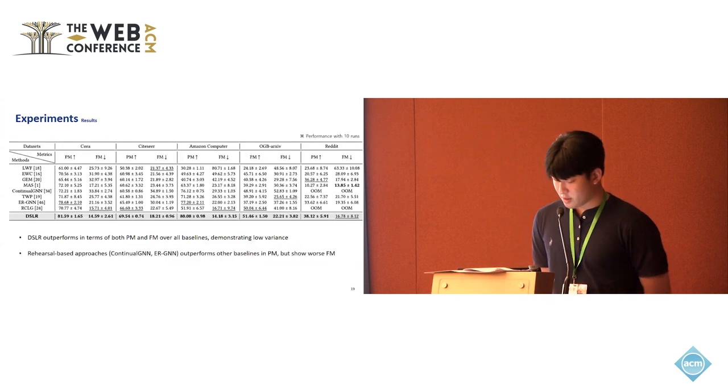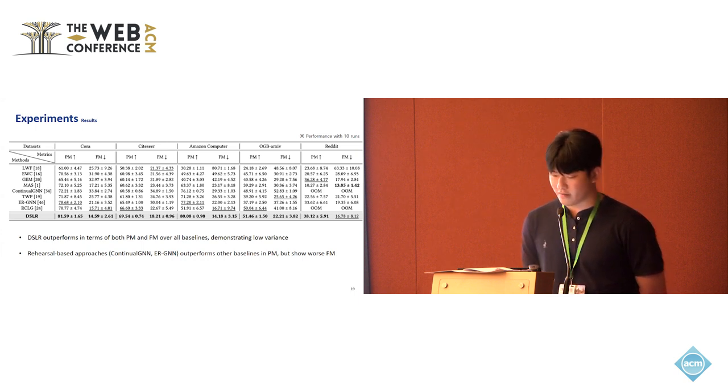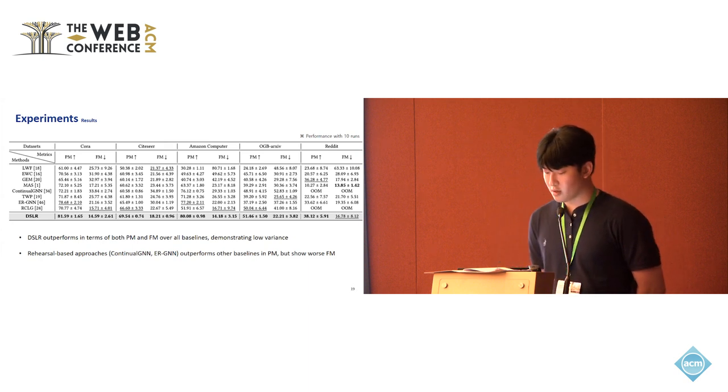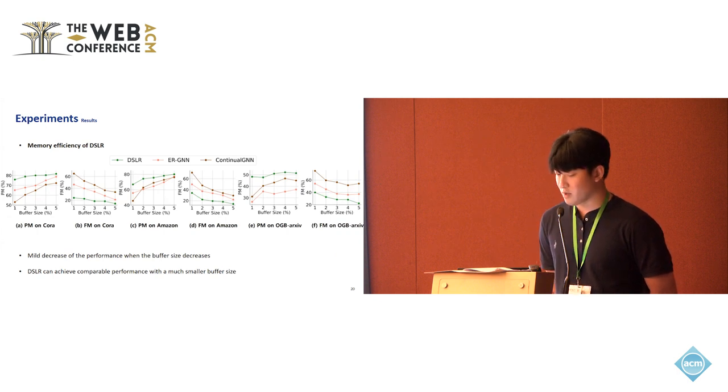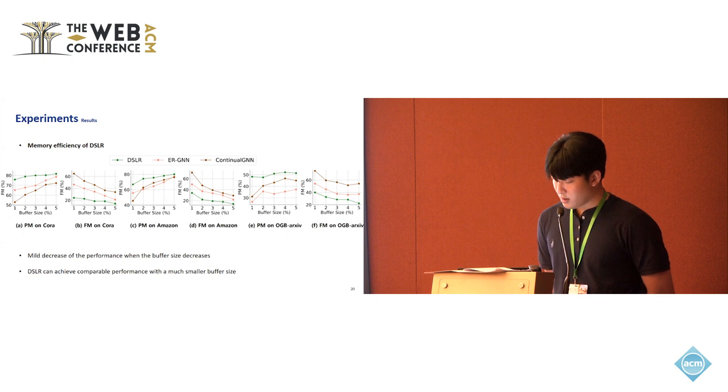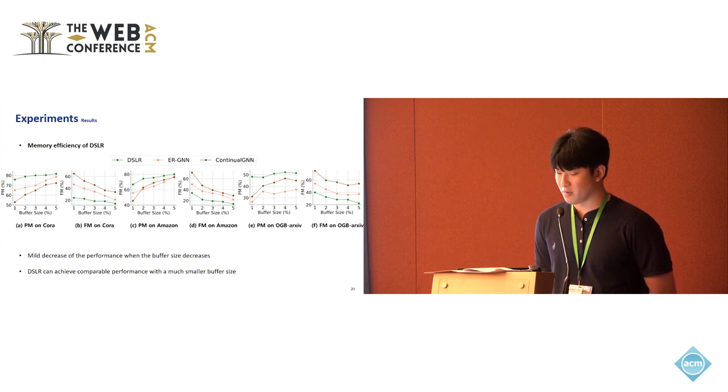And these are the main results. Two metrics were used to evaluate the model performance across five datasets. The DSLR outperforms in terms of both PM and FM over other baselines and demonstrating low variance. The rehearsal-based approaches such as continual GNN and ERGNN outperform other baselines in PM, but show worse FM. We compare the ERGNN and continual GNN, which are both rehearsal-based approaches, while varying the buffer size with our model, which is DSLR. DSLR shows mild decrease of the performance when the buffer size decreases, and DSLR can achieve comparable performance with a much smaller buffer size.